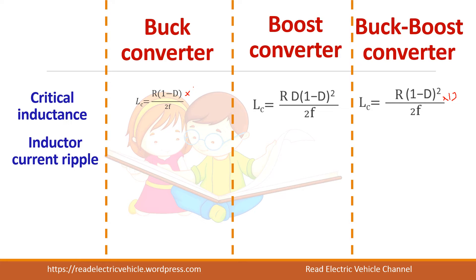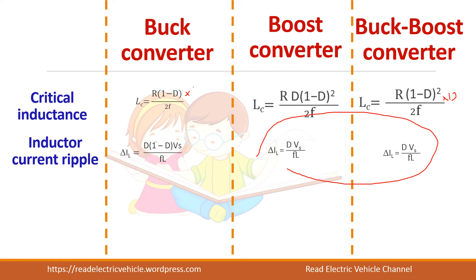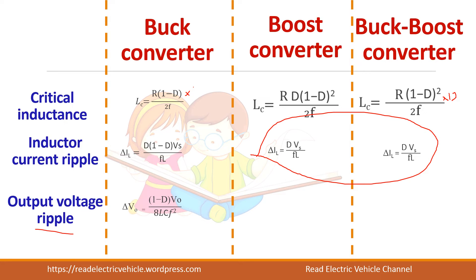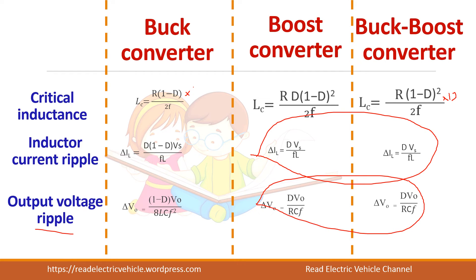The inductor current ripple for both the boost and buck-boost converters will have the same value. Similarly, the output voltage ripple also has the same value for both. So you can remember that the ripple is the same in both boost and buck-boost converters — it only varies for the buck converter.